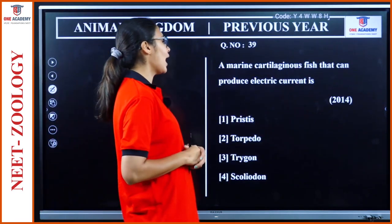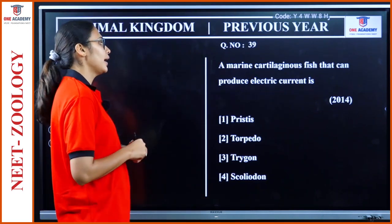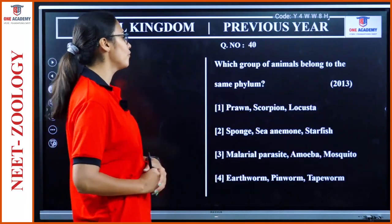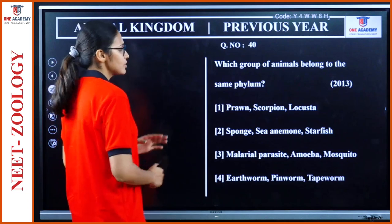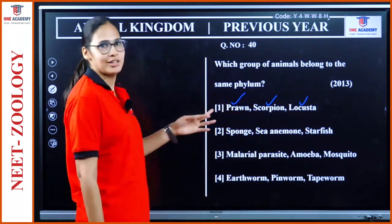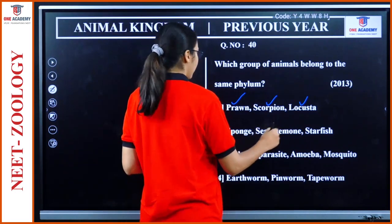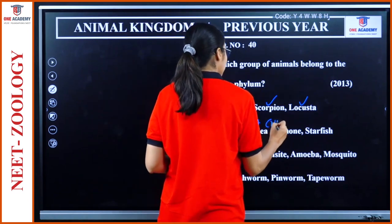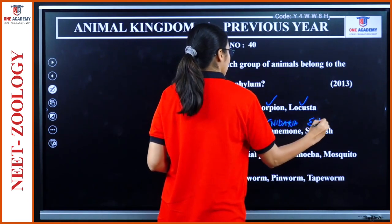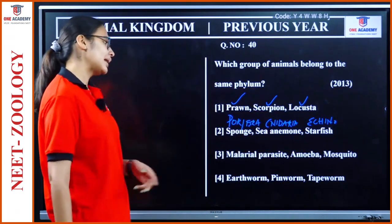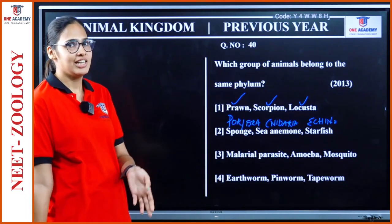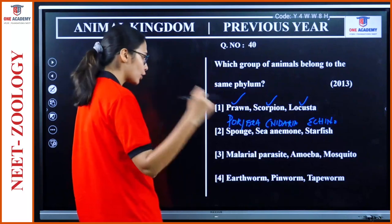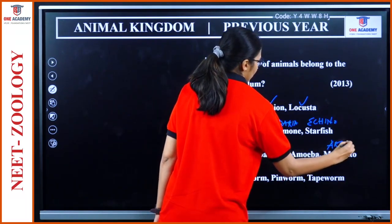Question 39: 'A marine cartilaginous fish that can produce electric current is Torpedo.' Question 40: Group these animals by phylum. Prawns, scorpion, Locusta — all Arthropoda. Sponges — Porifera. Ceratonema — Cnidaria. Starfish — Echinodermata. Malarial parasite (Plasmodium) is in Kingdom Protista, not Animal Kingdom. Amoeba — Protista. Mosquito — Arthropoda. Earthworm — Annelida. Tapeworm — Platyhelminthes. Option 1 — all arthropods — is the answer.